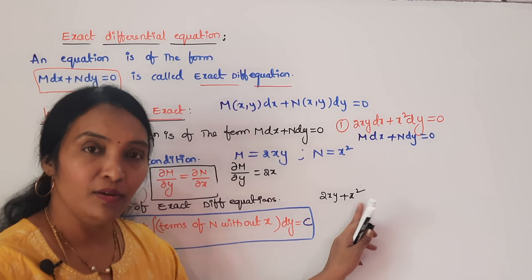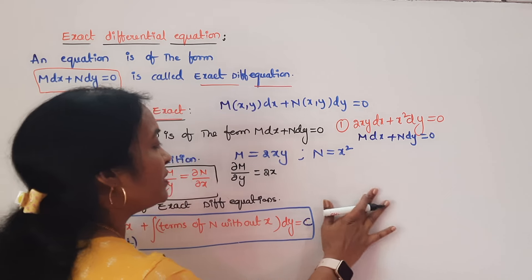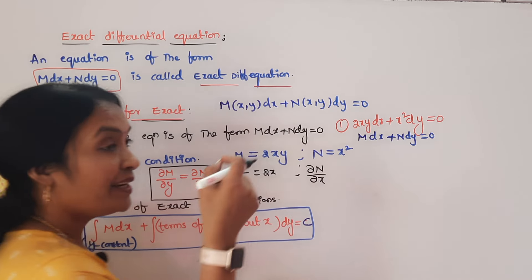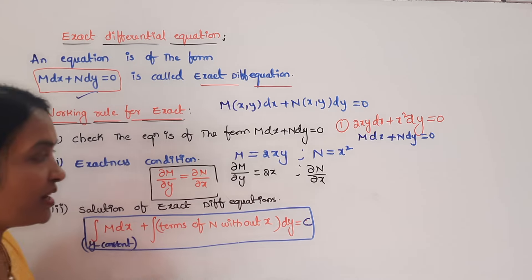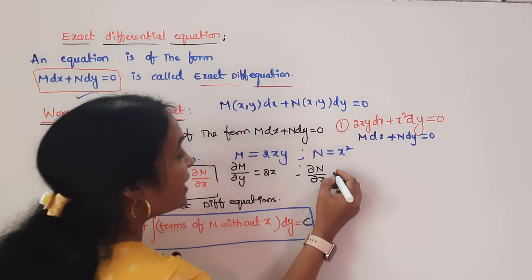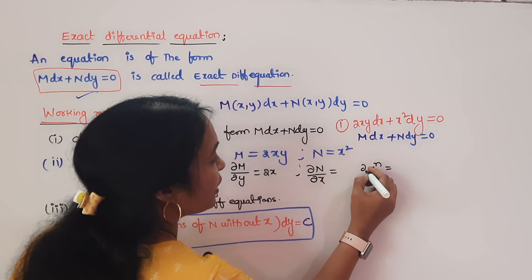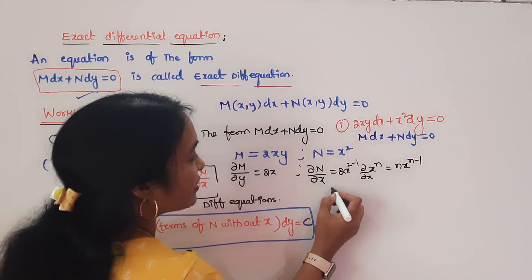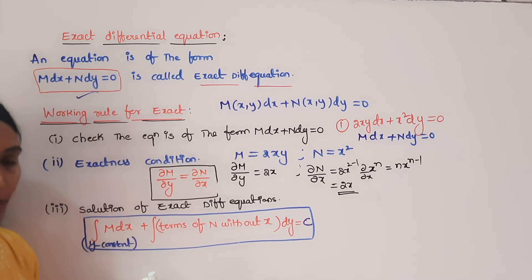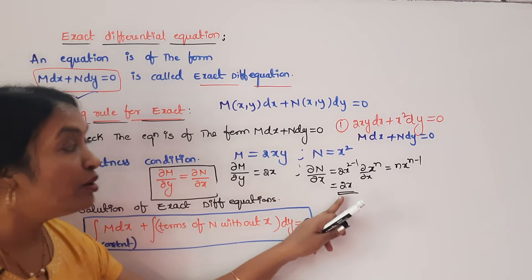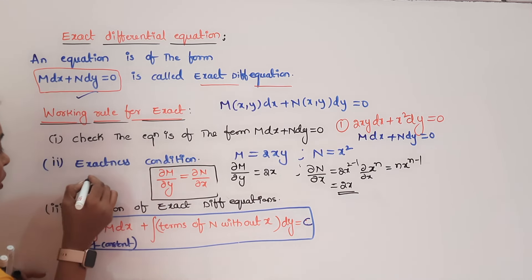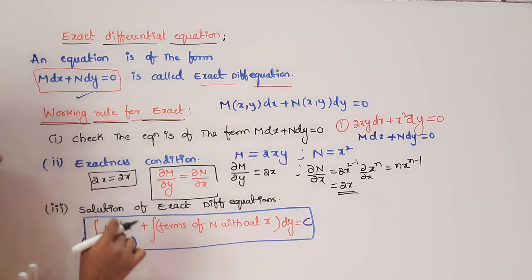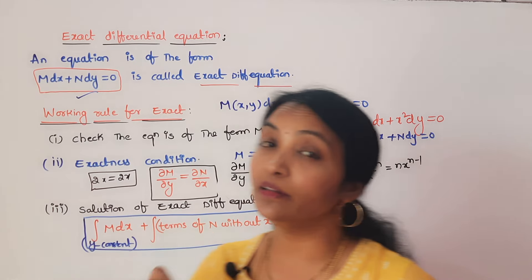Now compute ∂N/∂x: differentiating N equals x² with respect to X. There is no y term, only x. Using the formula d/dx of xⁿ equals n·xⁿ⁻¹, we get 2 into x² ⁻¹ equals 2x. So ∂M/∂y equals 2x and ∂N/∂x equals 2x. Therefore ∂M/∂y equals ∂N/∂x, and the given equation is an exact differential equation.